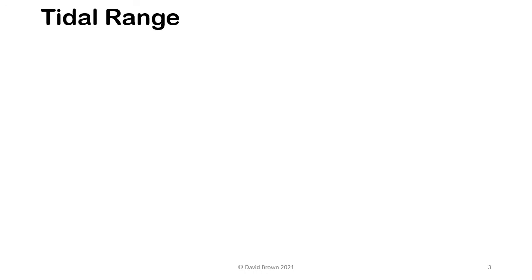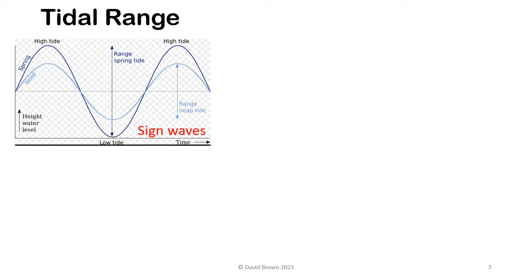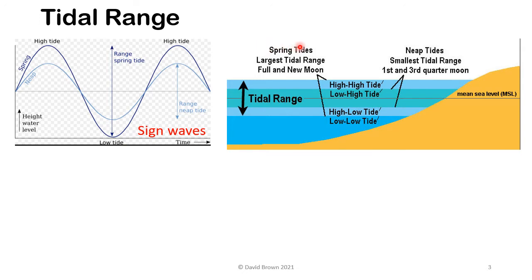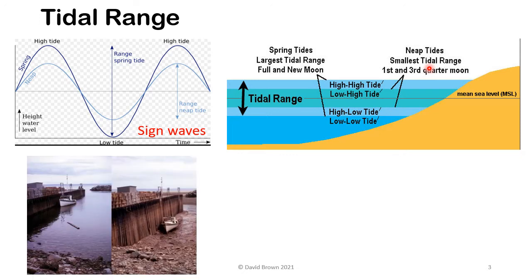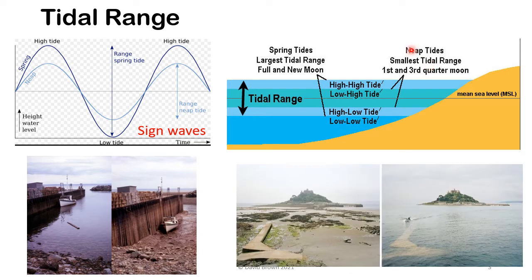Tidal range. In most areas there is a high and a low water every 12 hours 20 minutes or so, and the tidal range is the difference between high and low water. Spring tides have the largest tidal range and occur with the full and the new moon. Neap tides are the smallest tidal range and occur at the first and third quarter of the moon. The important factors for paddlers are not having to walk a long way to the water, or arriving somewhere to find hundreds of metres of mud or rocks.